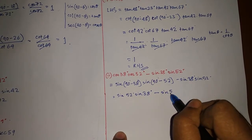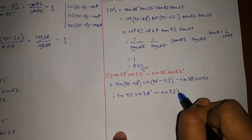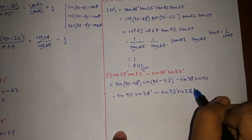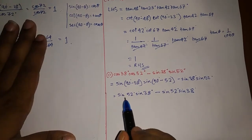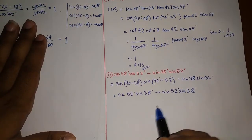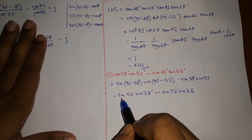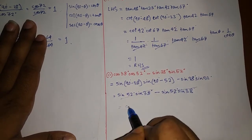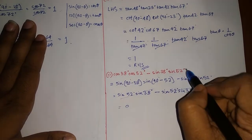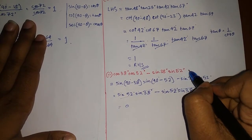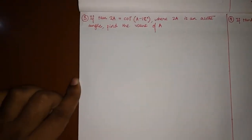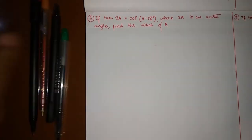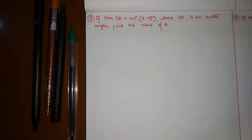You realize that these two terms are exactly the same — sin 52° · sin 38° and sin 52° · sin 38° — so they cancel each other and the answer is 0.